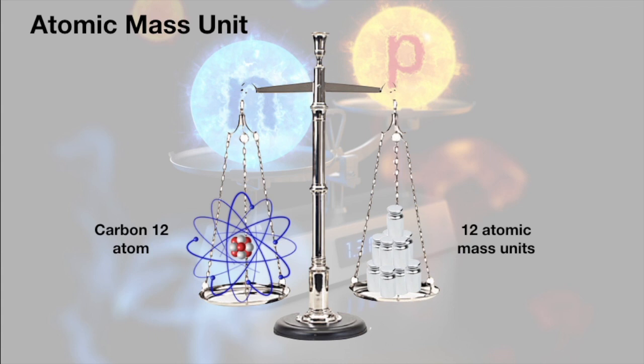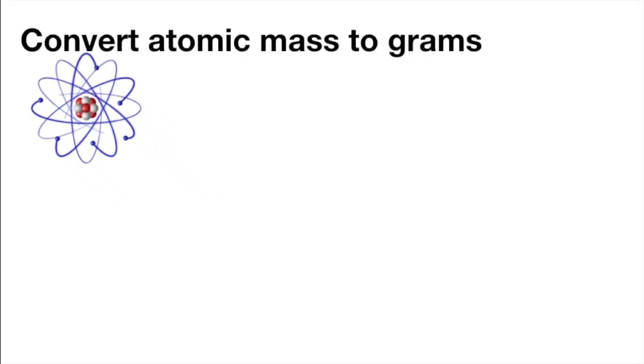For today, the only thing you have to know is that 1 AMU is equivalent to about 1.66 times 10 to the negative 24 grams. And so to convert AMU to grams, you just need to multiply by that number.